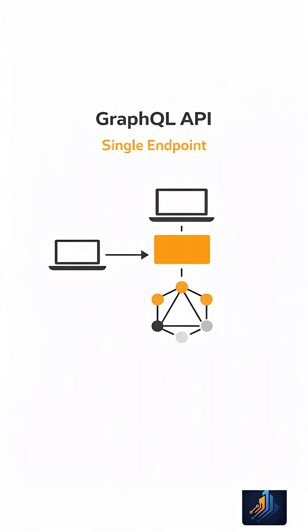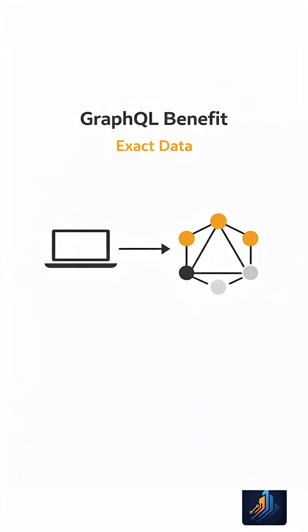GraphQL uses a single endpoint where clients describe exactly what they need. The result is precise responses — no extra fields, no missing data.